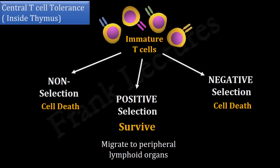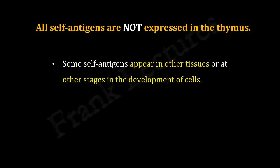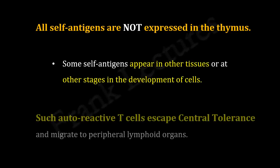But not all self-antigens are expressed in the thymus. Some self-antigens may appear in other tissues or at different stages in the development of cells. Auto-reactive T-cells recognizing these self-antigens escape central T-cell tolerance. They migrate successfully to peripheral lymphoid tissues where the mechanisms of peripheral tolerance prevent their maturation and eliminate them. We will study peripheral T-cell tolerance in our next video lecture.